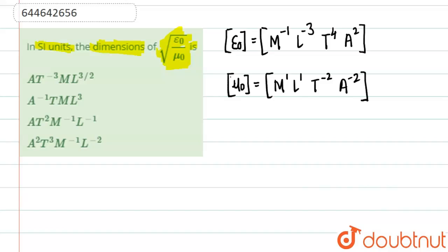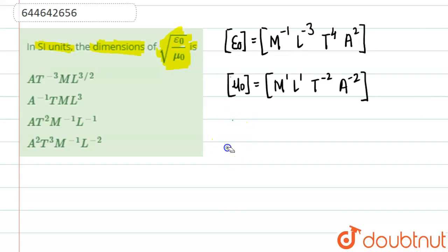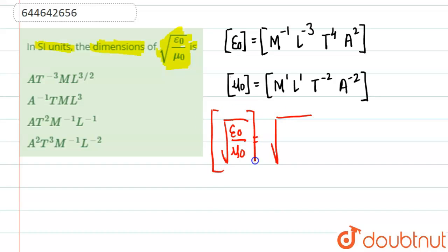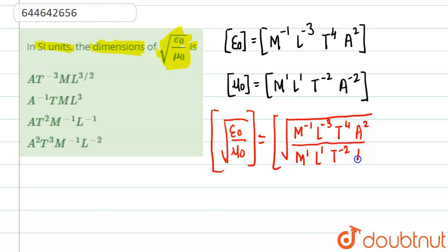Now we will find the dimension of the given quantity. Under root of epsilon naught by mu naught — we write the dimension sign under the root, so it becomes: under root of [M minus one, L minus three, T four, A two] divided by [M one, L one, T minus two, A minus two].